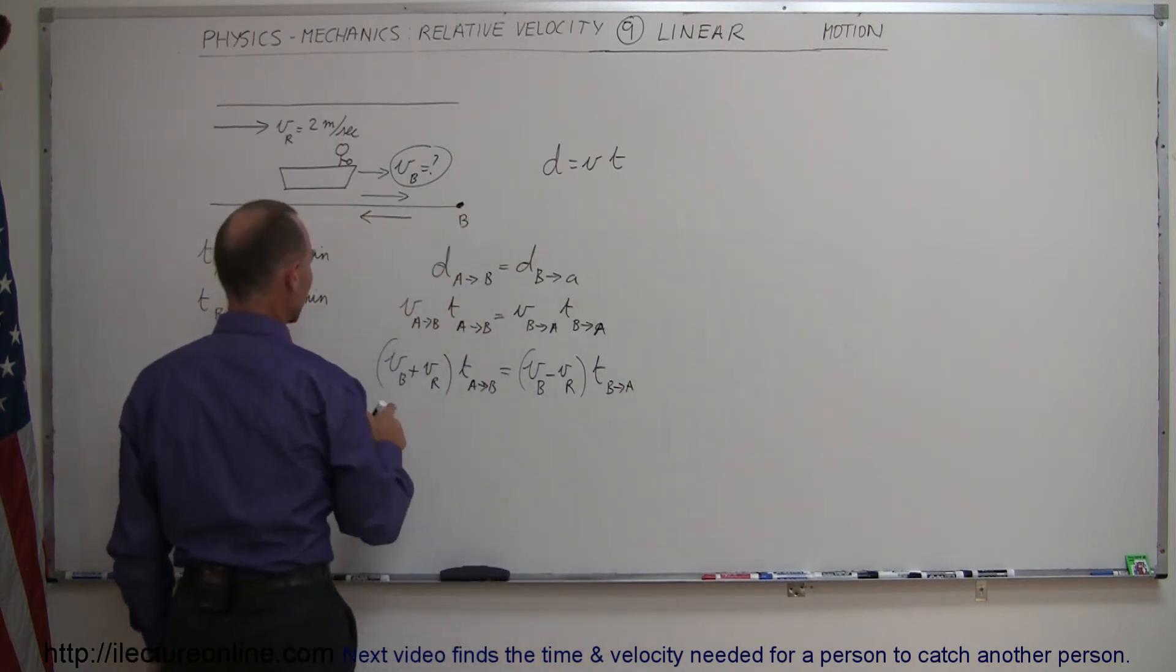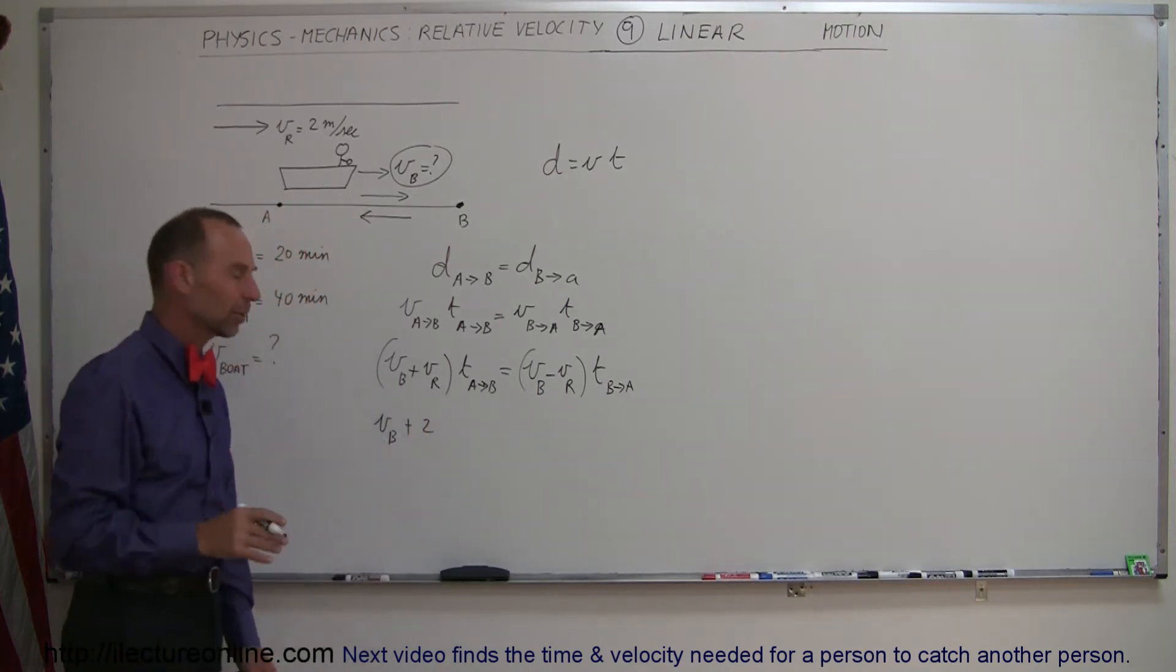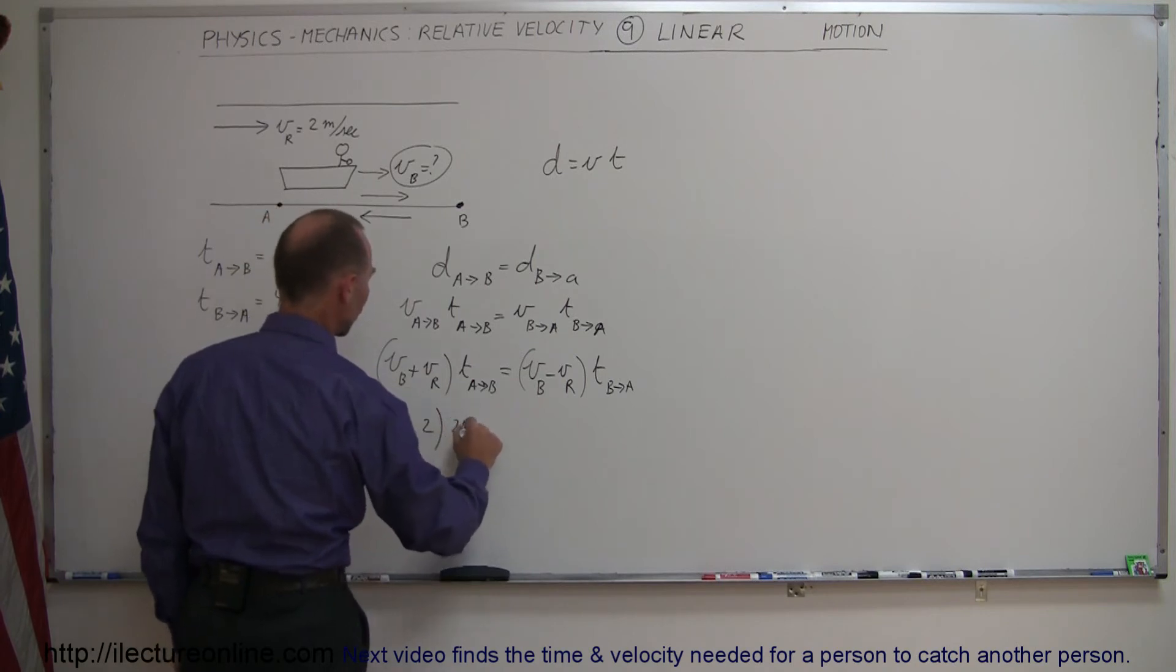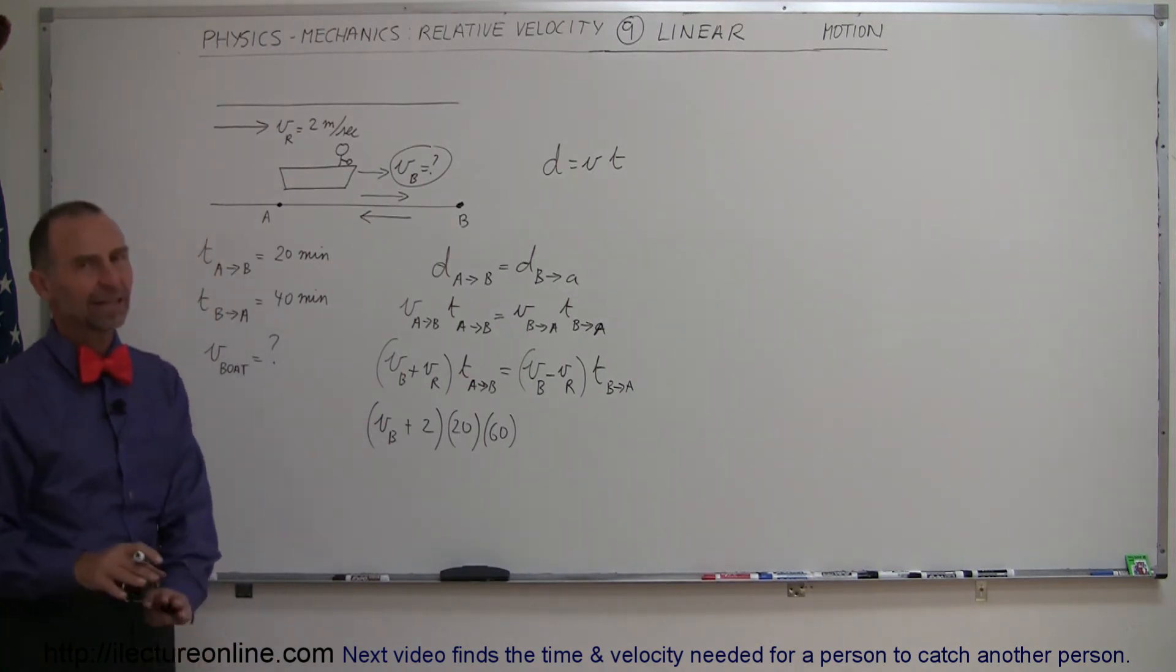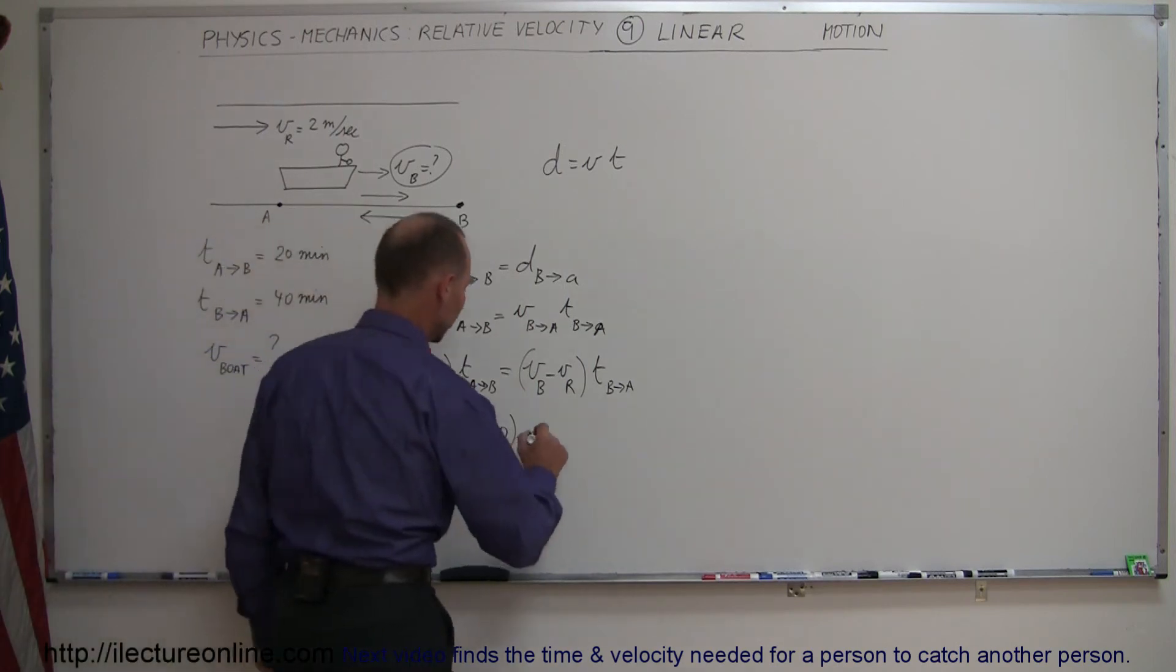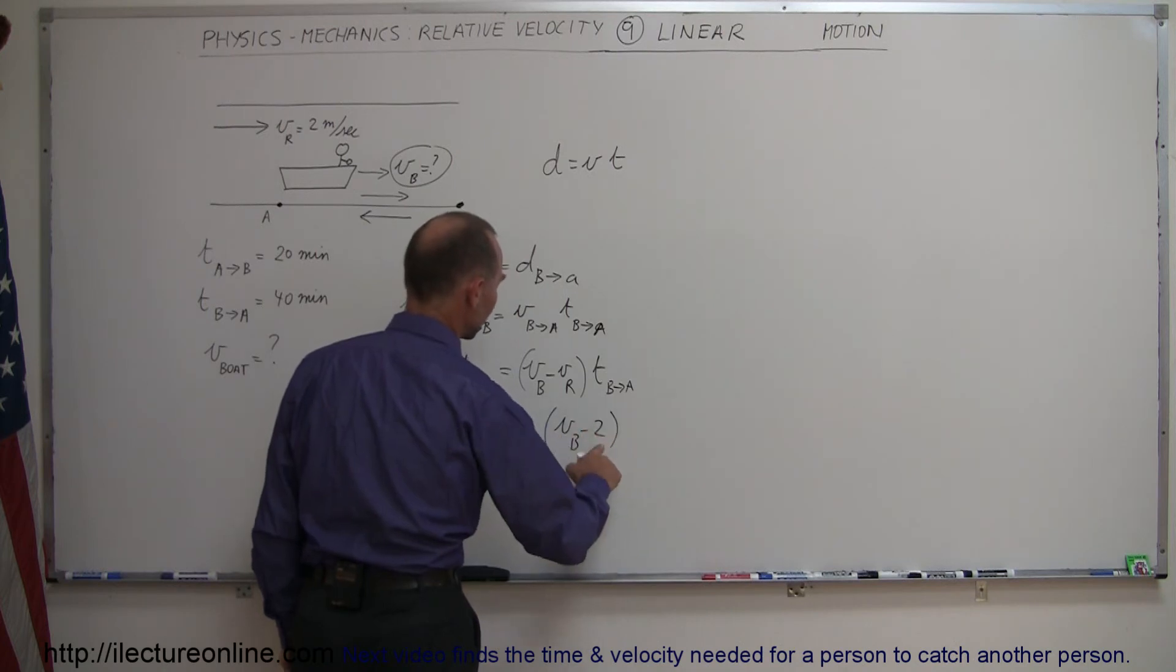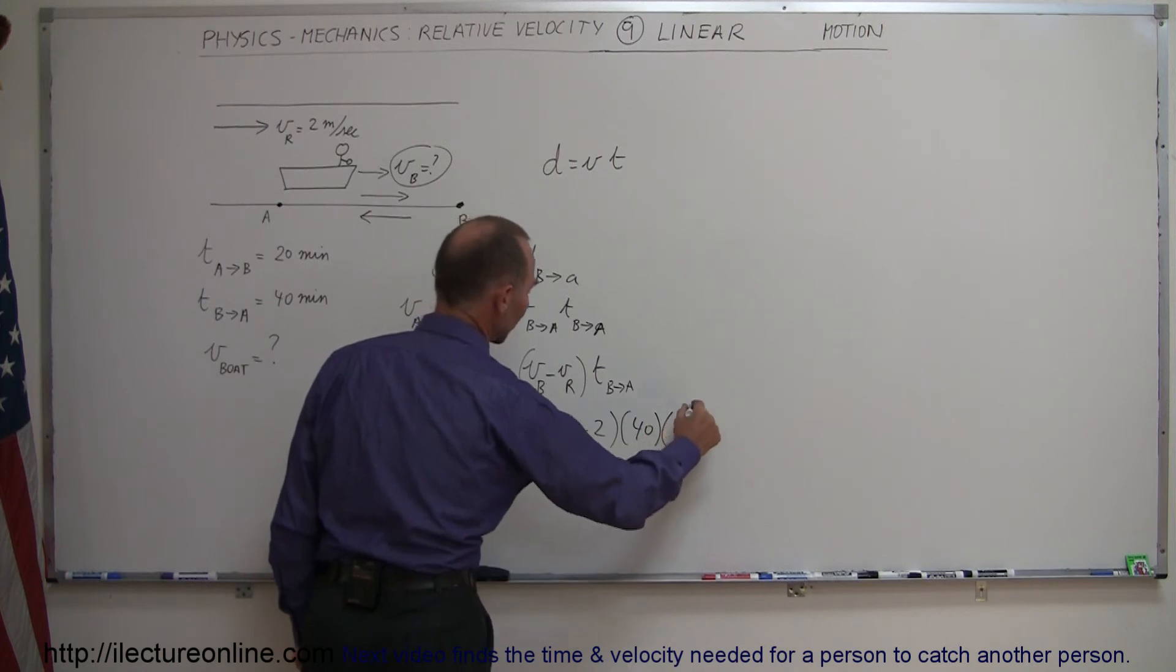Alright, let's plug in numbers now. So here we have the boat is, well we don't know what it is that we're looking for, plus 2. I'll just leave the units out because it's easier. And times the time. The time would be 20 minutes. Of course we don't want it in minutes, we want in terms of seconds, so we'll multiply times 60 to go from minutes to seconds. Actually the units in seconds and minutes will just cancel out, but just to show that I want to keep it in standard units. This is equal to velocity of the boat which we're looking for minus the velocity of the river which is 2, times the time coming back which is 40 minutes, and of course we convert that to seconds like that.